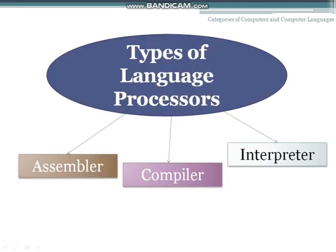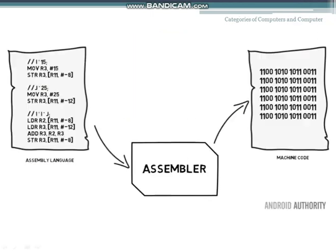The types of language processors are divided into three: assembler, compiler, and interpreter. Let's learn them one by one. Starting with assembler — the translator program which is used to convert assembly language into machine language is called an assembler.